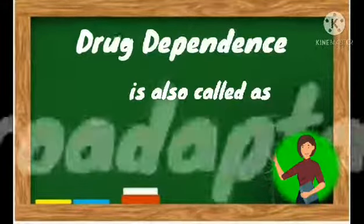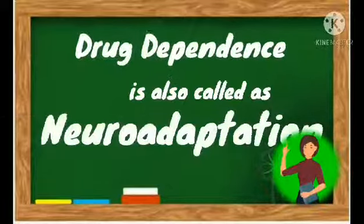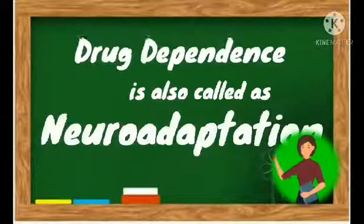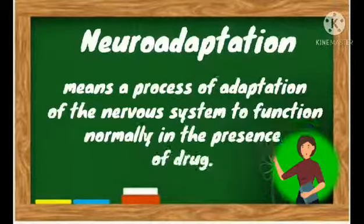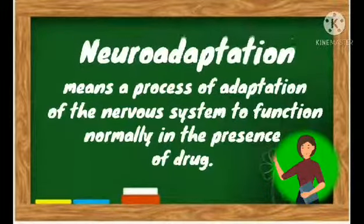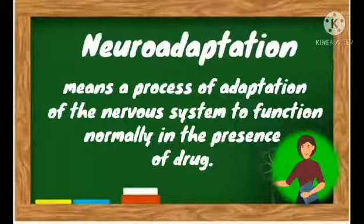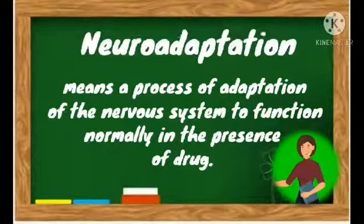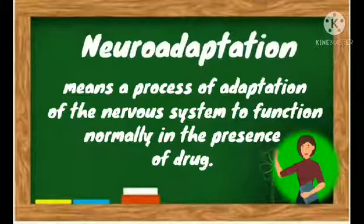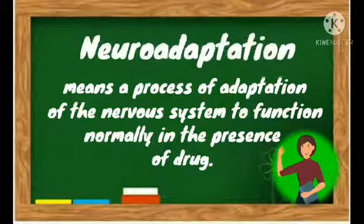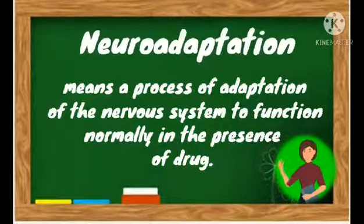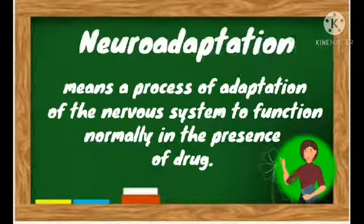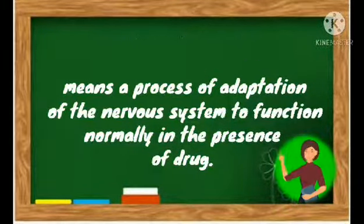Drug dependence is also called neuroadaptation, which means a process of adaptation of the nervous system to function normally in the presence of a drug. That means our nervous system is adapting itself to work in a proper manner only in the presence of a drug.